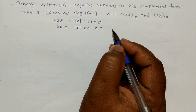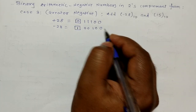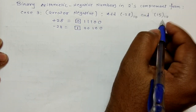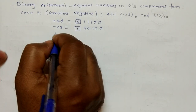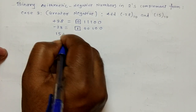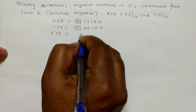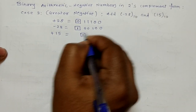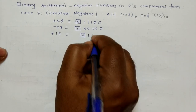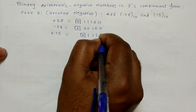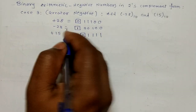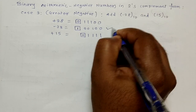Now we have to write +15 in binary, which is 0 1 1 1 1 1. Now we have to take the addition of minus 28 and plus 15.